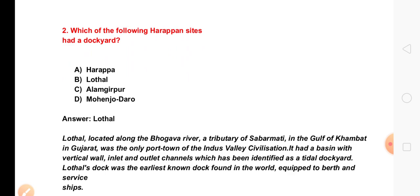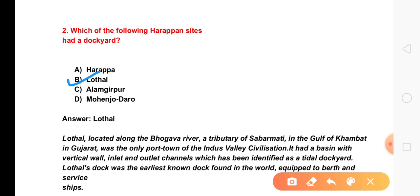The next question is: which of the following Harappan sites had a Dockyard? The answer is Lothal. Lothal is a Harappan site known for having a Dockyard.